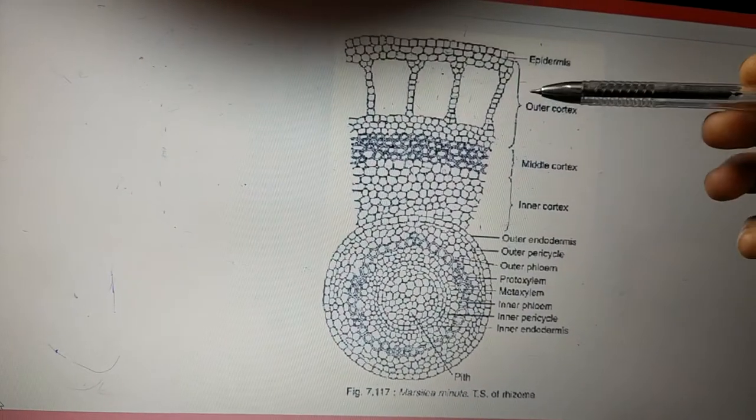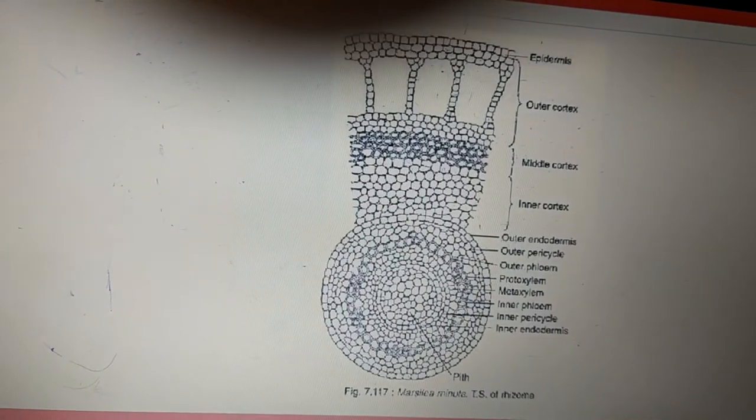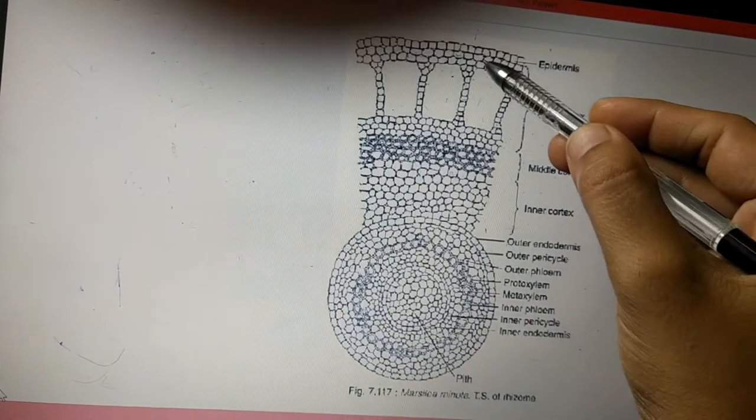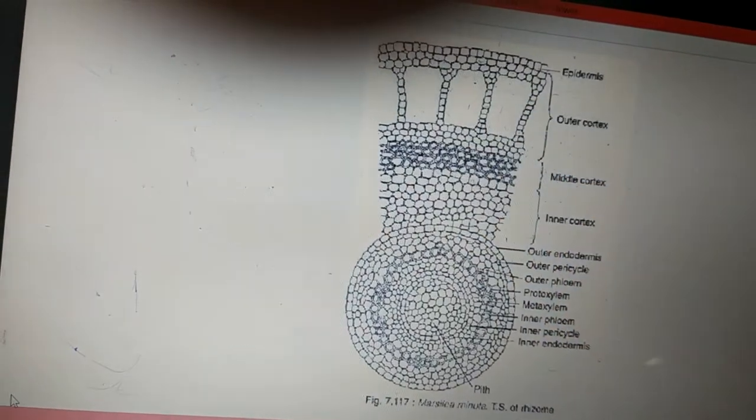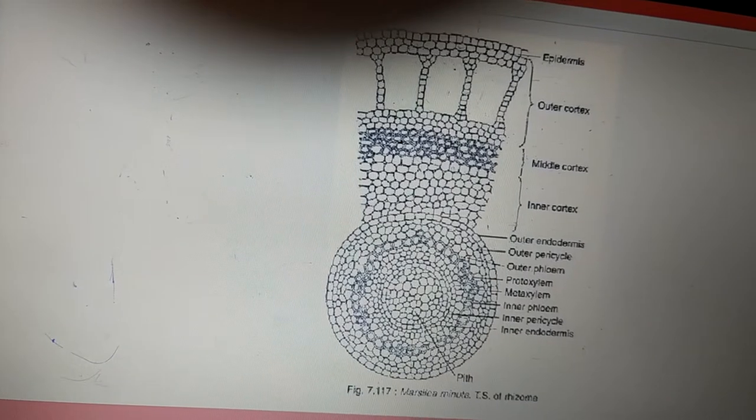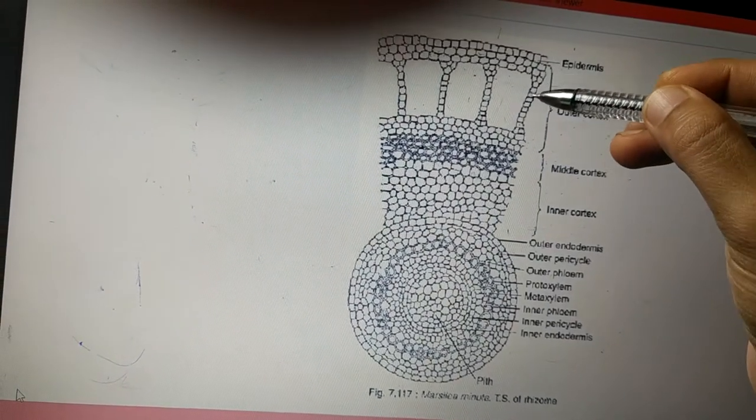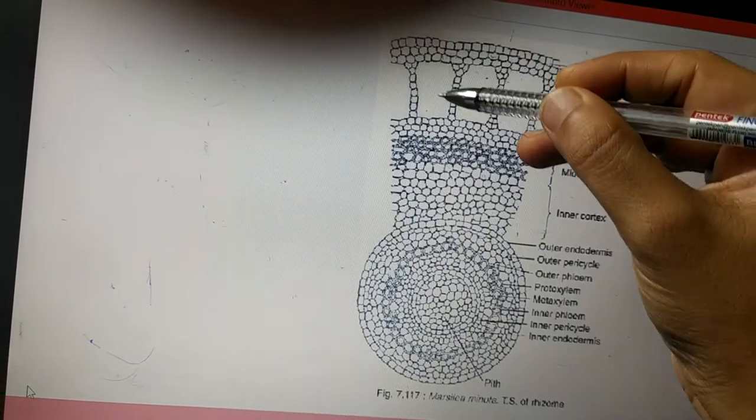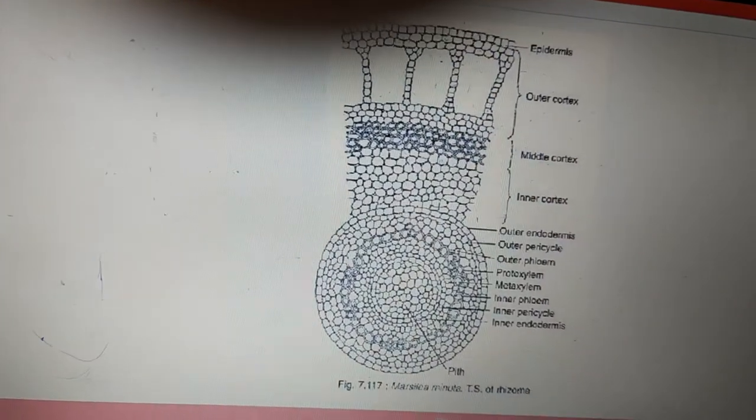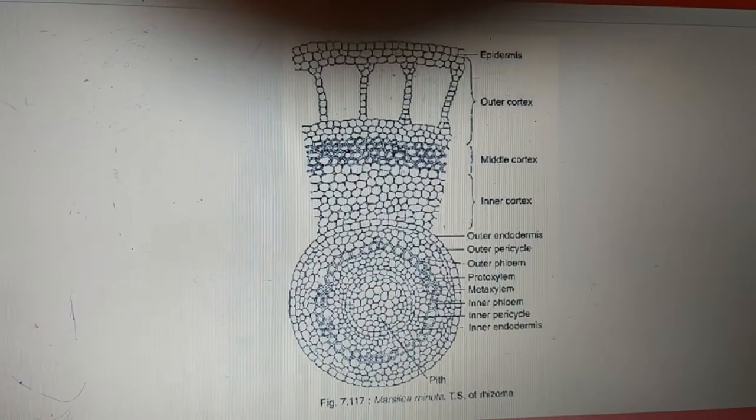The cortical region is divided into outer, middle, and inner cortex. The outer cortex is parenchymatous with air chambers or air space. These air chambers or spaces are separated from each other by a single layered septum. These spaces are going to help in buoyancy of this plant.